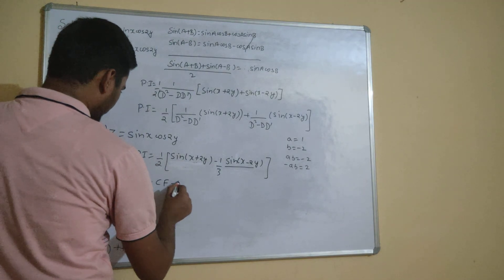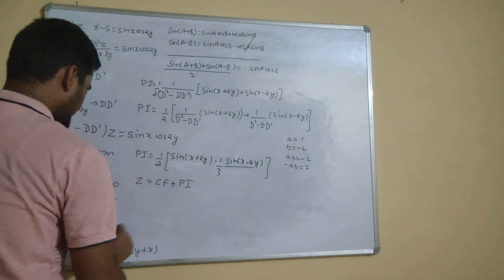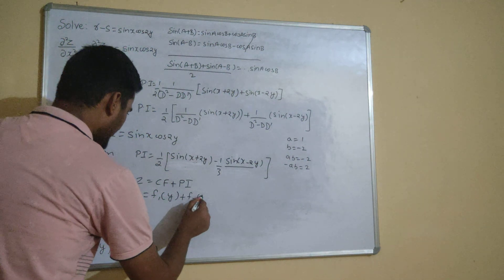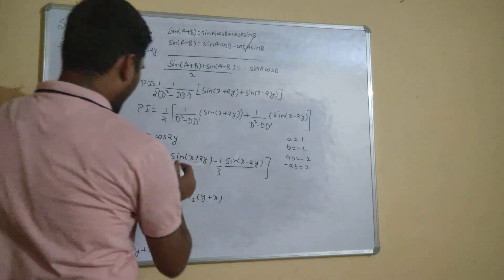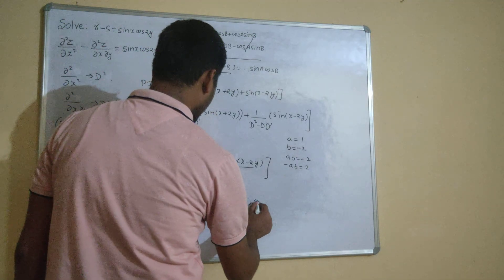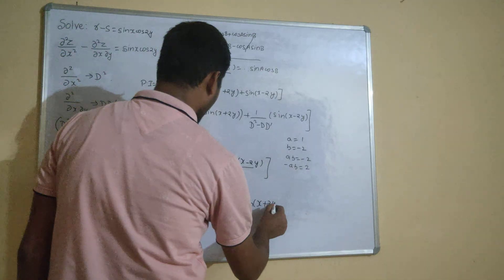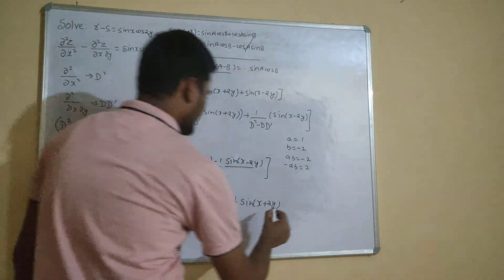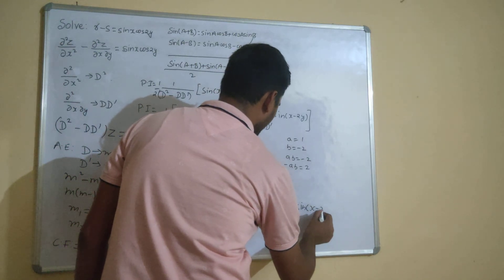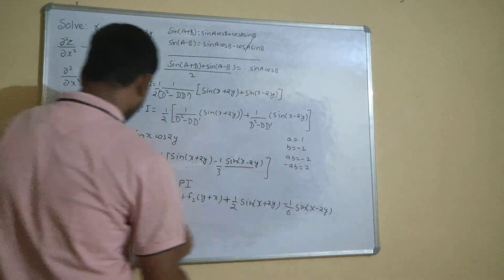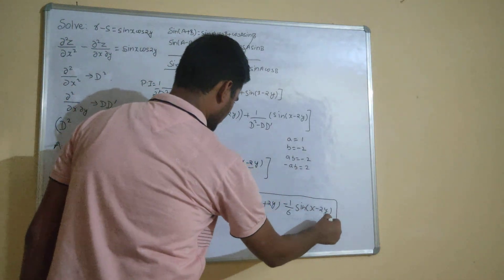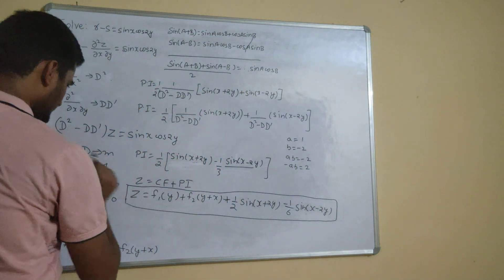So the final answer is z = CF + PI, which is z = f₁(y) + f₂(y+x) + (1/2)sin(x+2y) - (1/6)sin(x-2y).